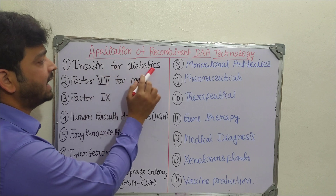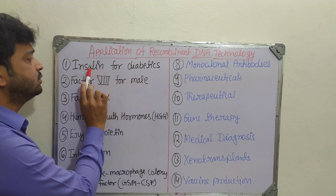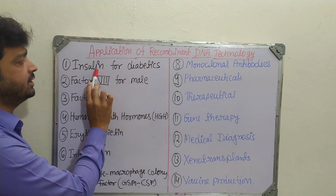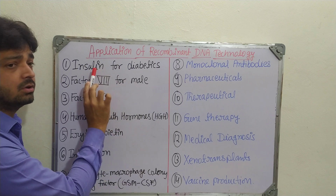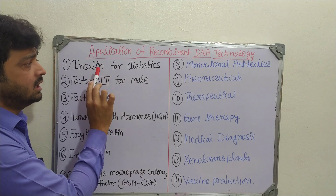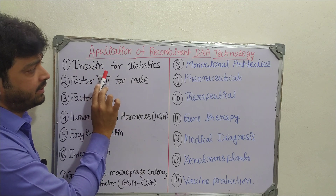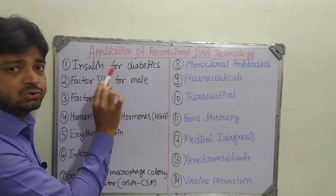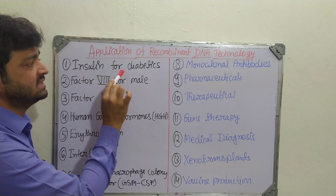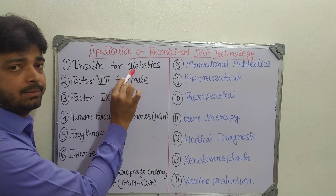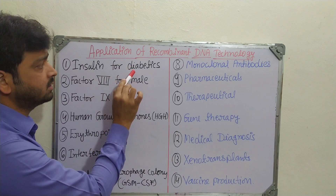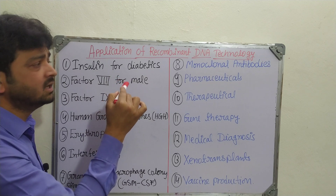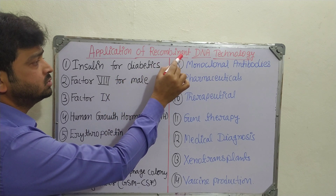The first application is insulin production for diabetes. Insulin can be produced using recombinant DNA technology at a higher quality, because insulin prepared from sheep or cattle has changes in its amino acid sequences that are not suitable for human beings — unlike the insulin secreted by the human pancreas.